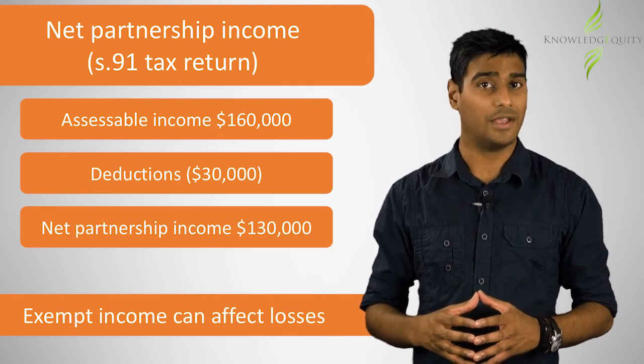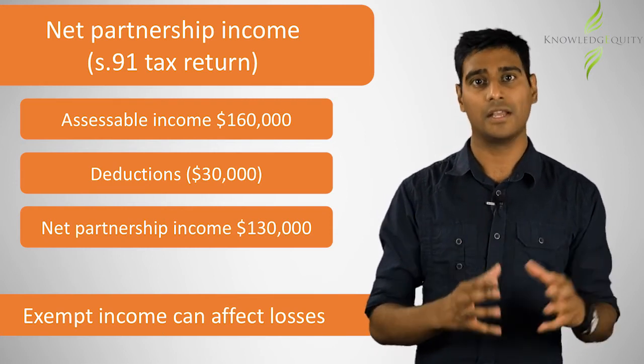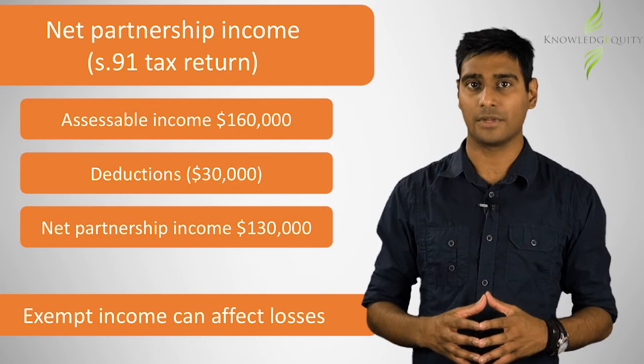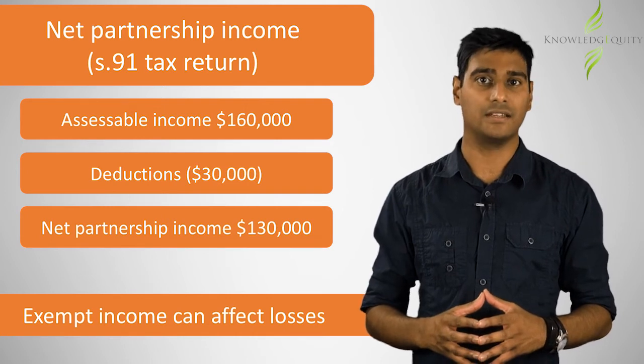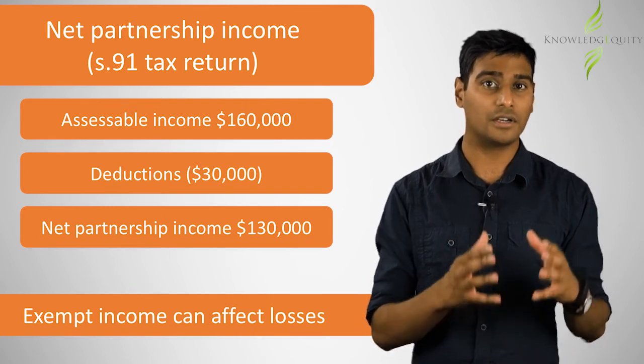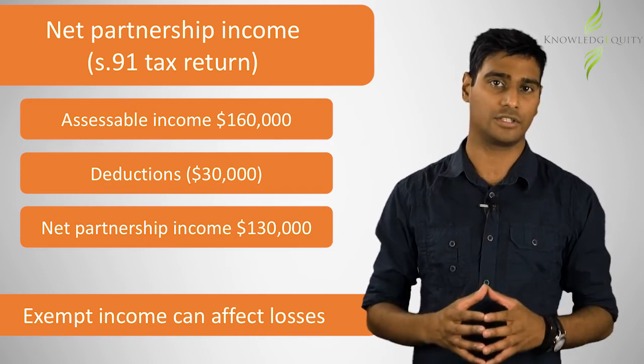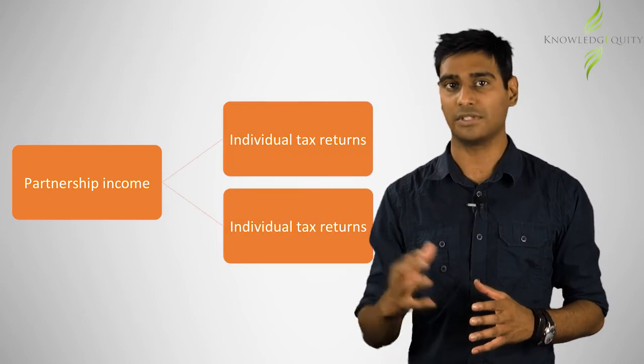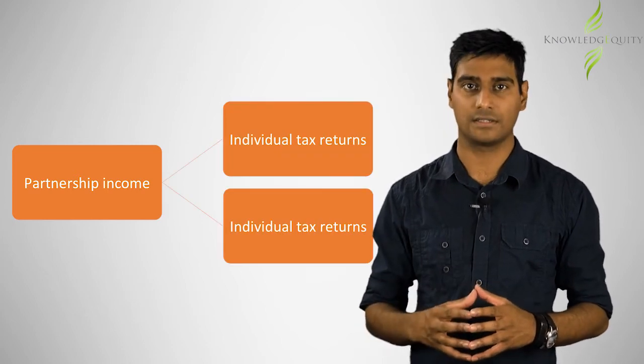The exempt income is not assessable and does not affect the net income of the partnership. However, we need to remember that the presence of exempt income could make a difference if the partnership made a loss. The second step is for Alice and Bill under section 92 to put their share of the partnership income in their individual tax returns.